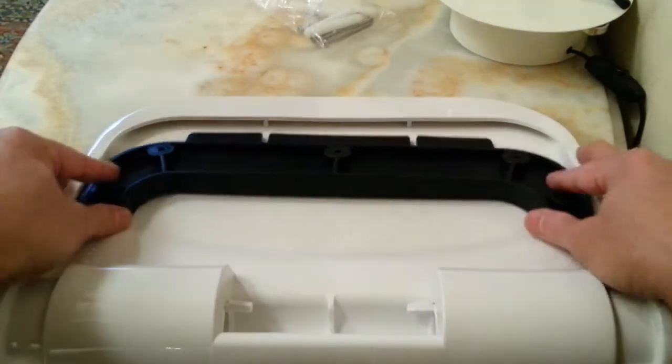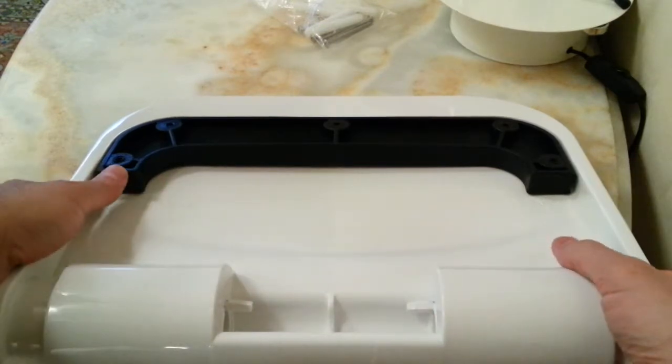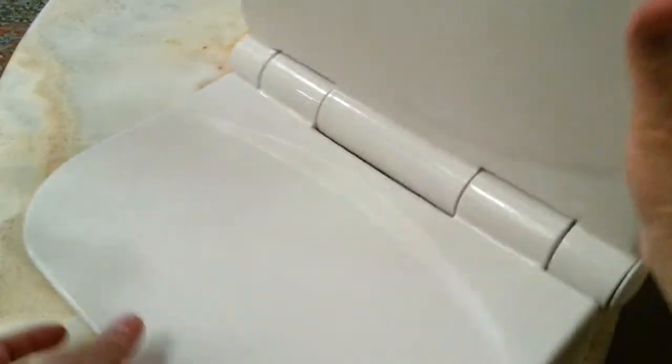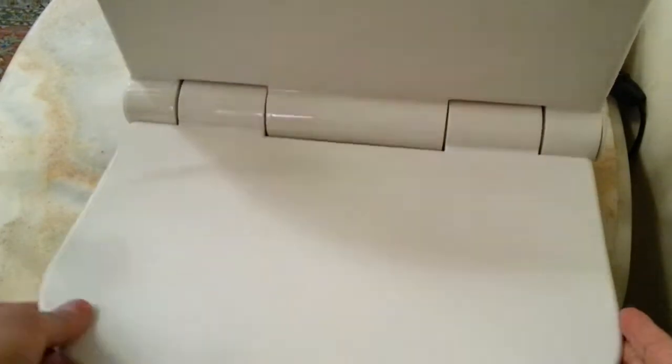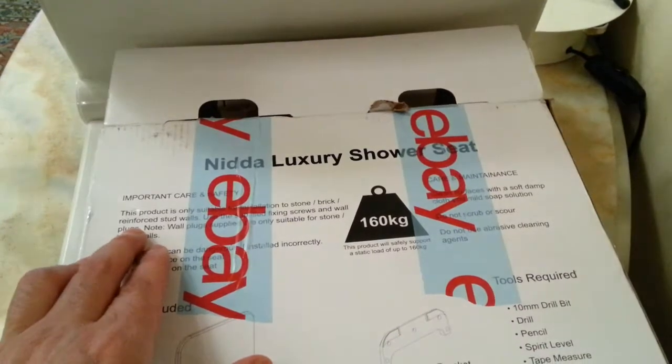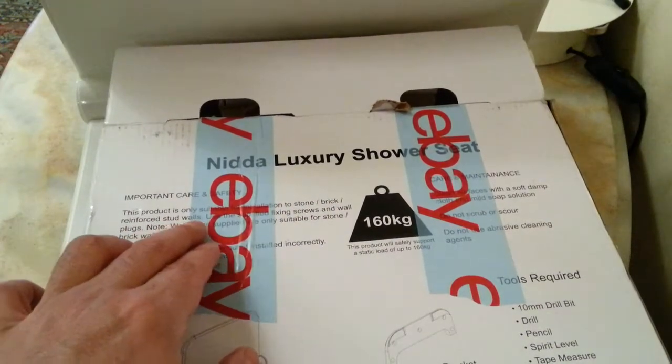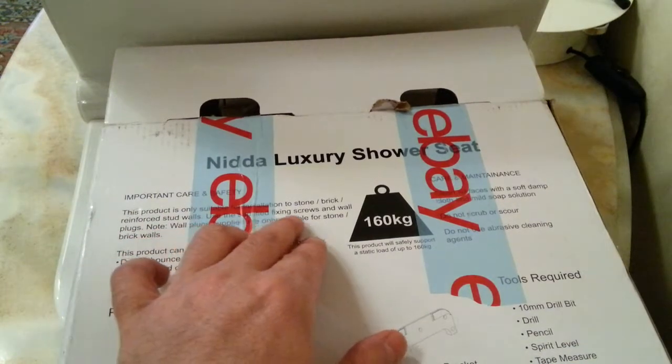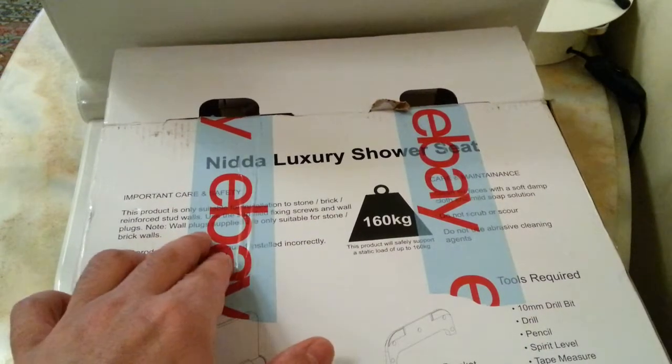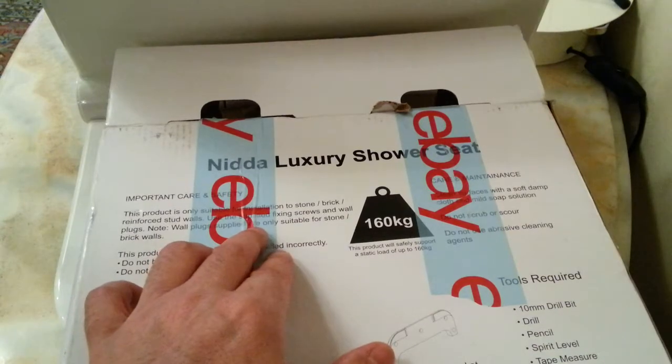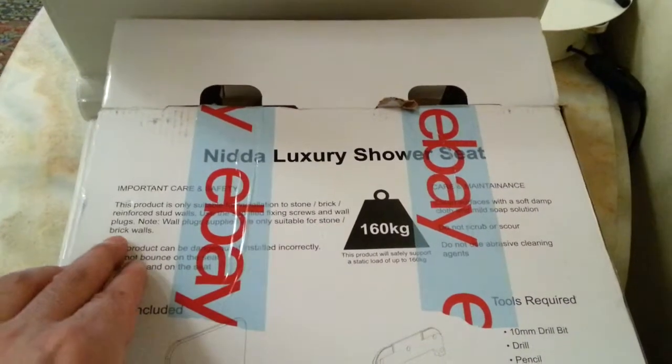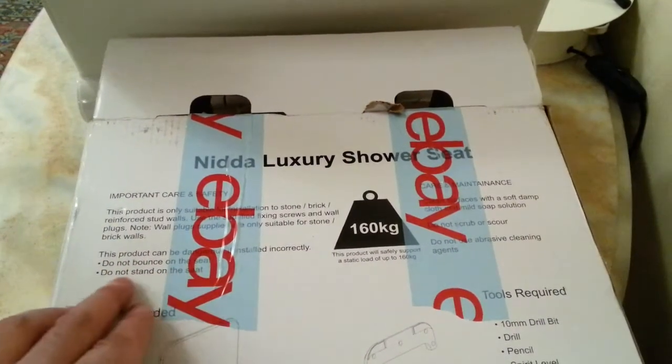Everything remains to be seen after I install it. On the paper it says do not jump on it, do not stand on it. You have to install it to a brick wall. It says this product is only suitable for installation to stone brick, reinforced stud walls. Use the supplied fixing screws and wall plugs. Note the wall plugs supplied under the sticker are only suitable for stone brick walls. Do not bounce on the seat, do not stand on the seat.